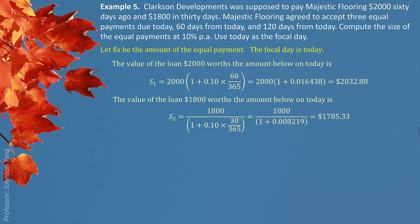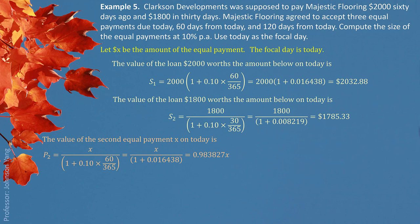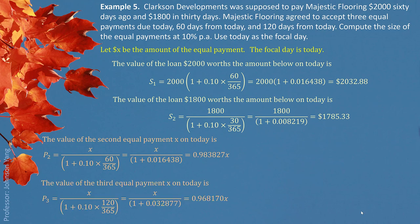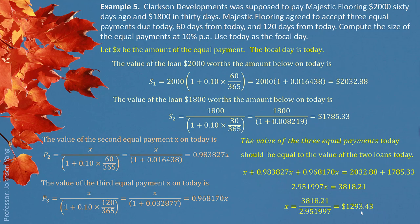Now we look at the new plan with three X's. The first X happens today — no adjustment needed. The second X, 60 days out, needs to be moved back to today as a present value. The third X, 120 days out, similarly requires a present value calculation. We carry X through to get the coefficients in front of X for convenience. Putting them together, the sum of the three equivalent X values should equal S1 plus S2. Solving the equation gives us the equal payment size: $293.43.